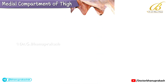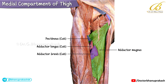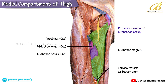Upon further dissection and after removing the adductor brevis, the largest muscle in the medial compartment, the adductor magnus, is now demonstrated. The cut ends of the pectineus, adductor brevis, and adductor longus are clearly visible. The posterior division of the obturator nerve can be seen innervating the adductor magnus. Tracing the adductor magnus distally to its tendon, the femoral vessels passing through the adductor hiatus opening can be clearly appreciated.